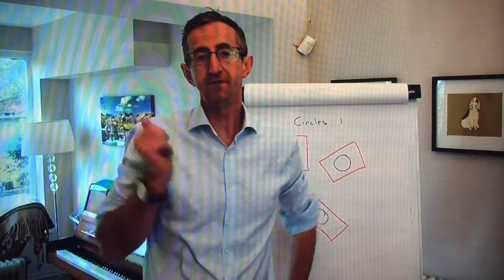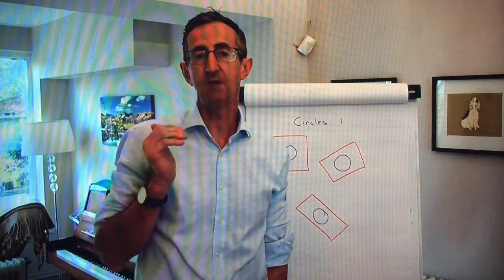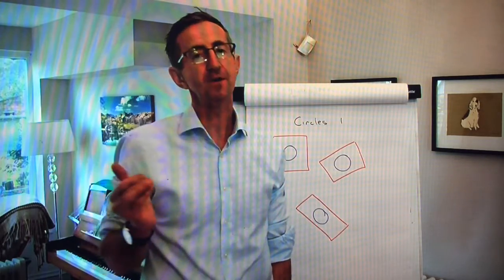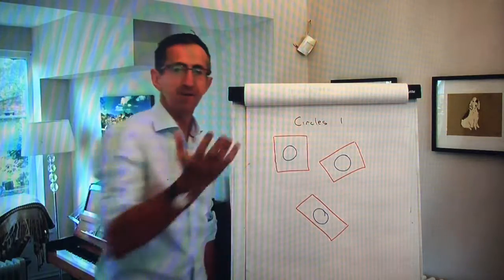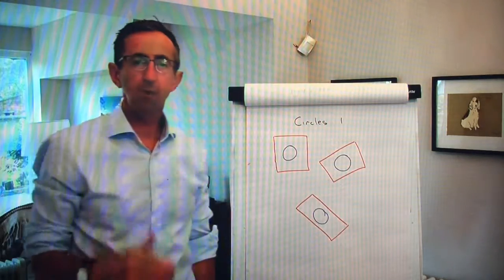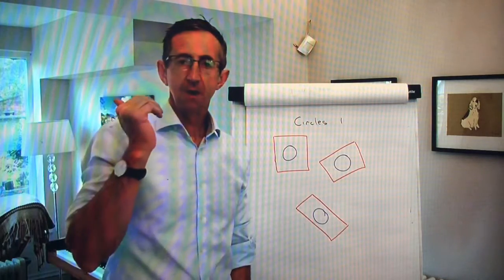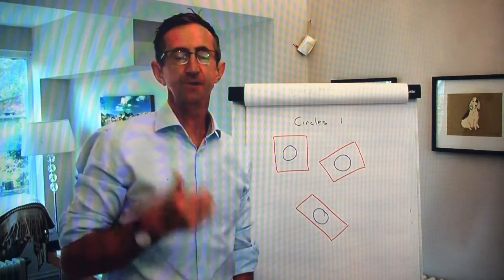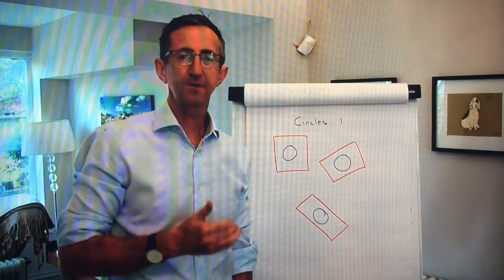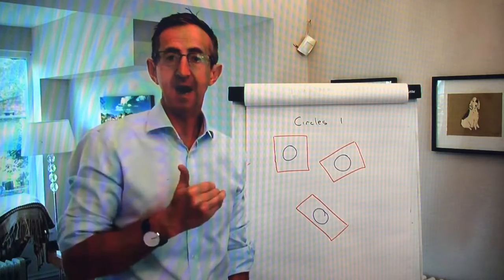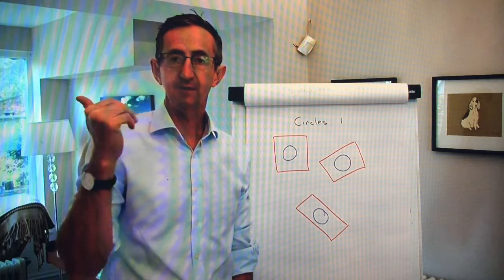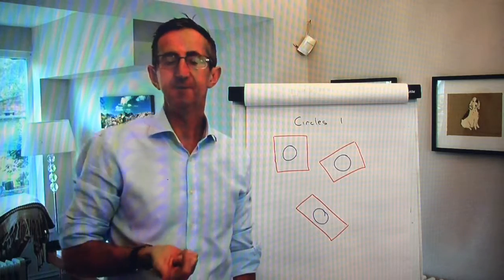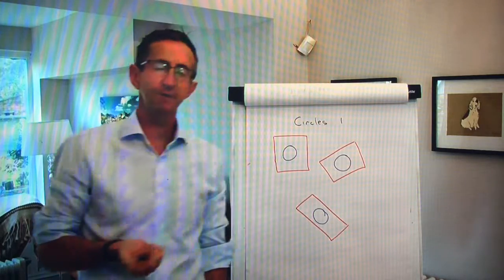Welcome to the video tutorial for the first of two lessons on circles in the shape span, called Circles One. In the past I have called it 'cups and saucers' because it's a practical exploration of pi — the circumference compared to the diameter of the circle.